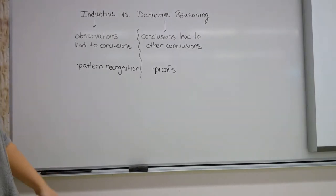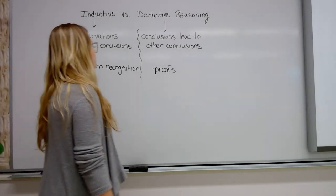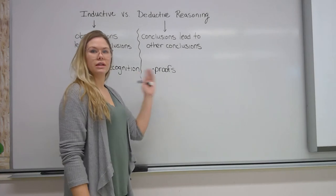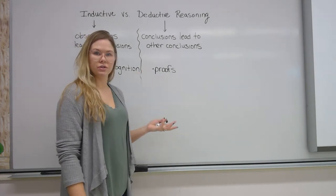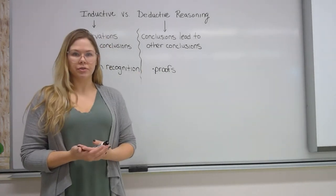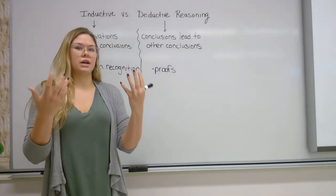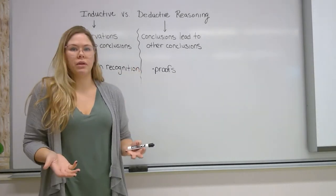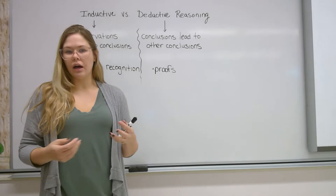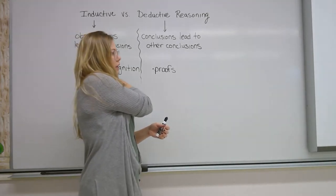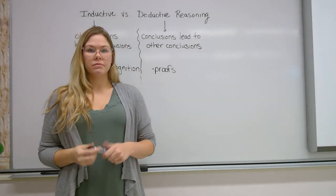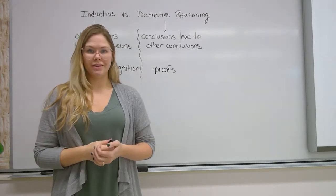So this is what leads into deductive reasoning. Deductive reasoning — how I like to think about it — is that it's conclusions that lead to other conclusions. We start with things that we already know to be true and we use those truths to come up with either more complex truths or different types of conclusions. Here's an example.